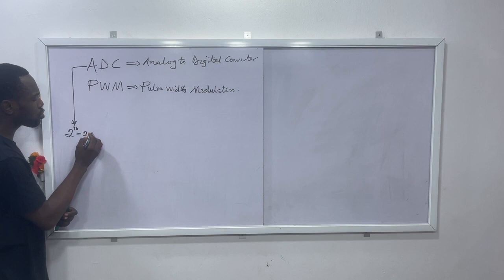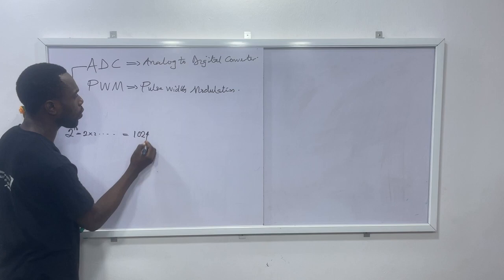The ADC of Arduino is actually 2 raised to the power of 10. That gives you 2 times 2 times 2 — ten times over — which gives you 1024.